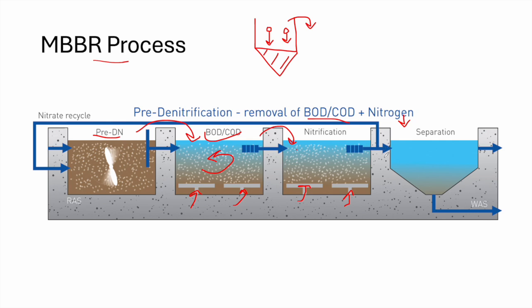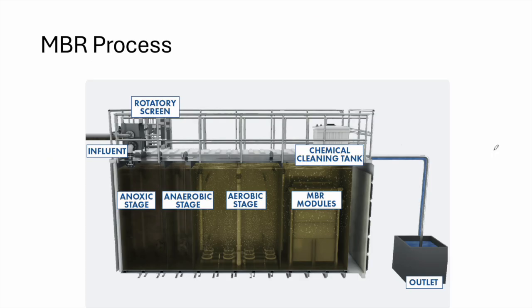By these two stages — pre-denitrification and nitrification — we are able to highly reduce nitrogen. At the end, we have a secondary settling tank where particles settle by gravity, forming activated sludge that is wasted. There is no need to return the sludge. At the end of this process, we will have excellent effluent quality.